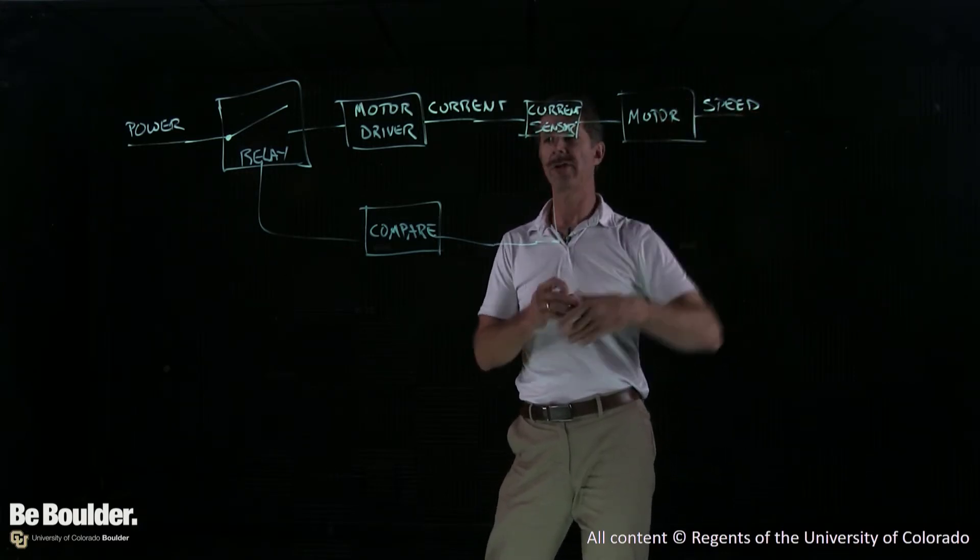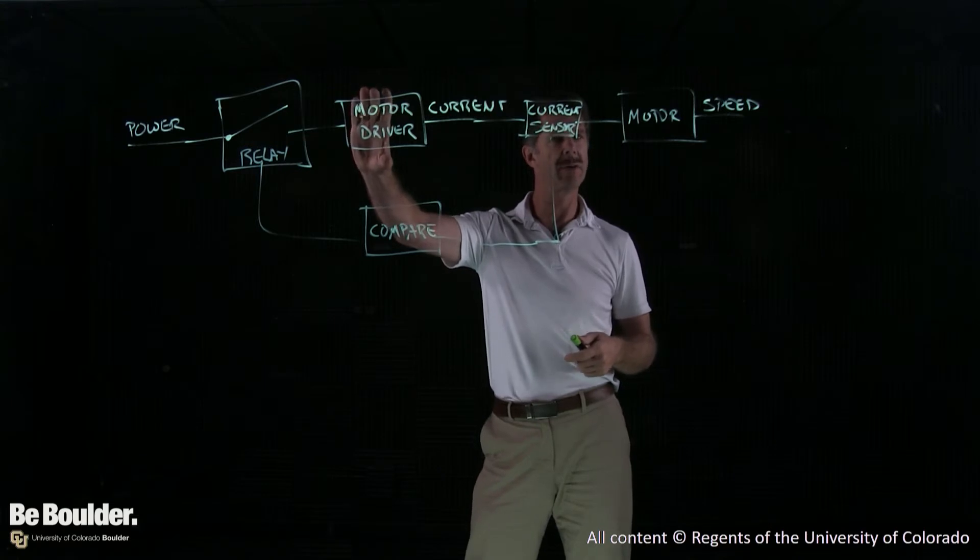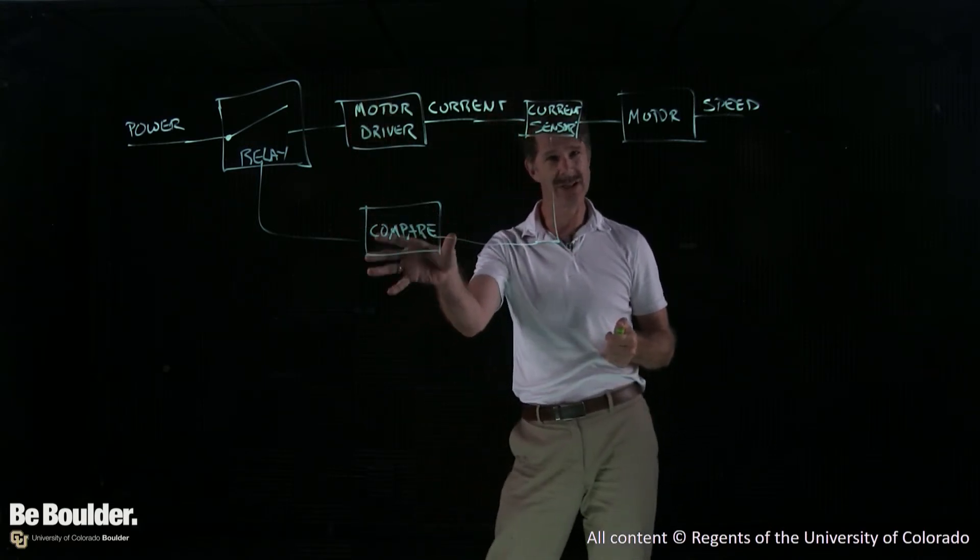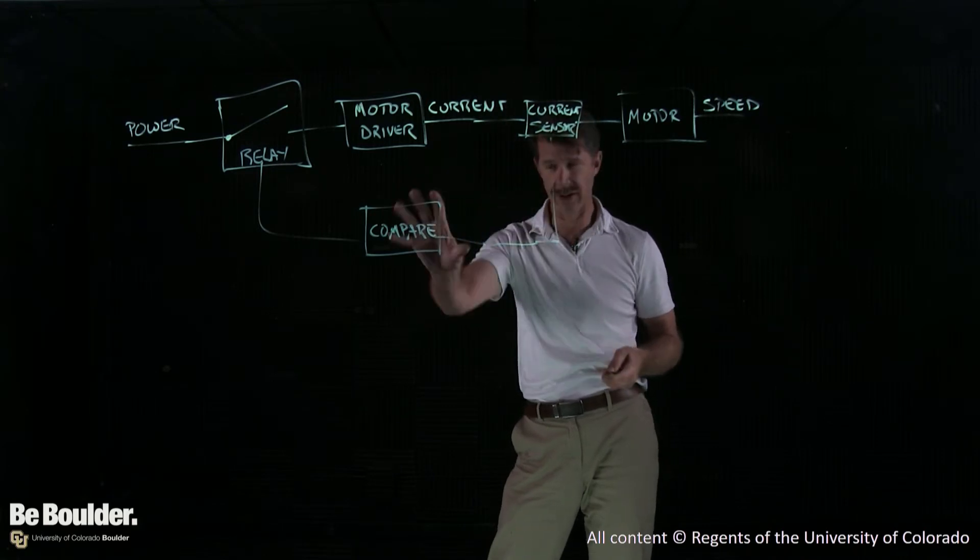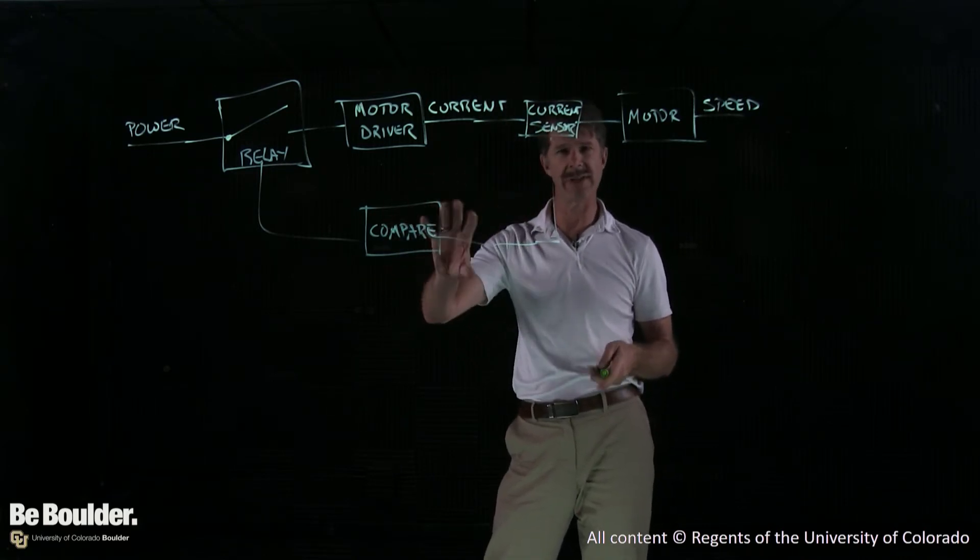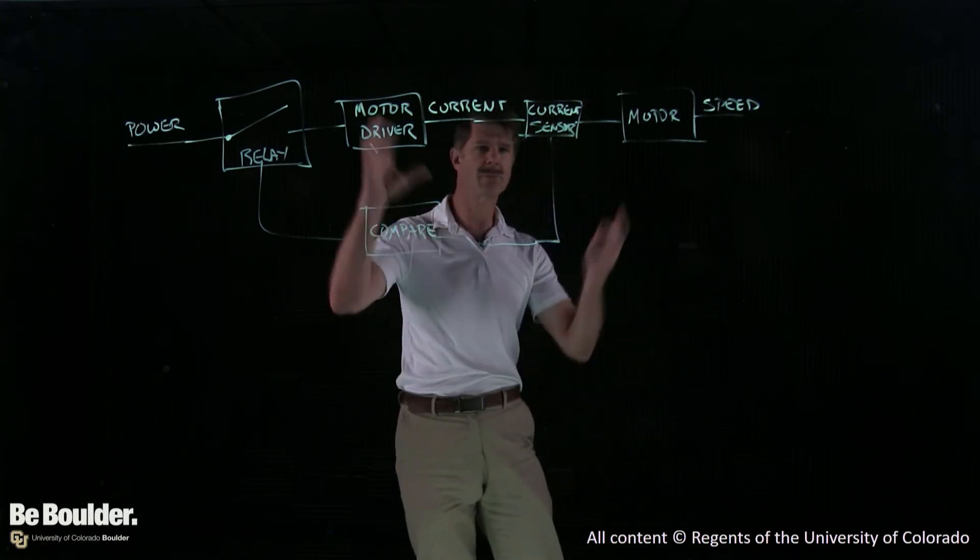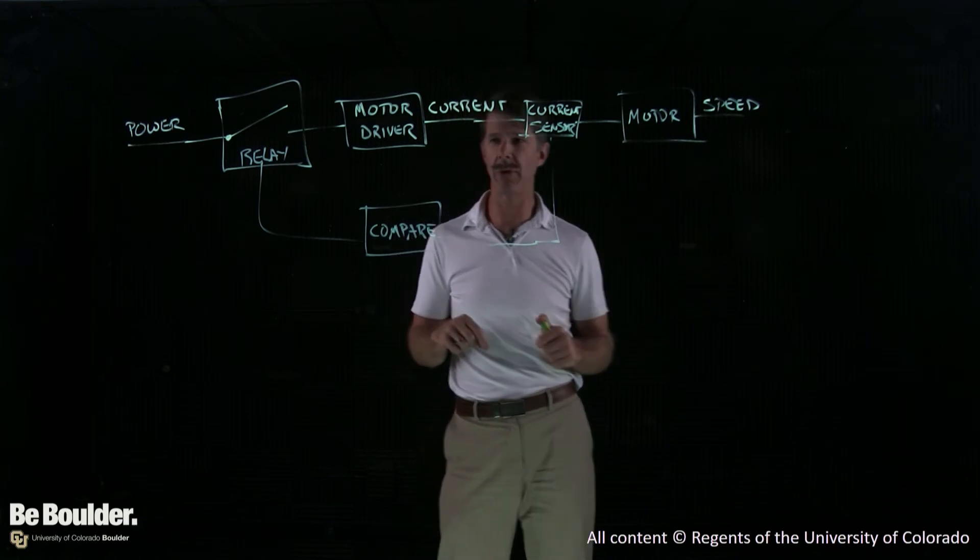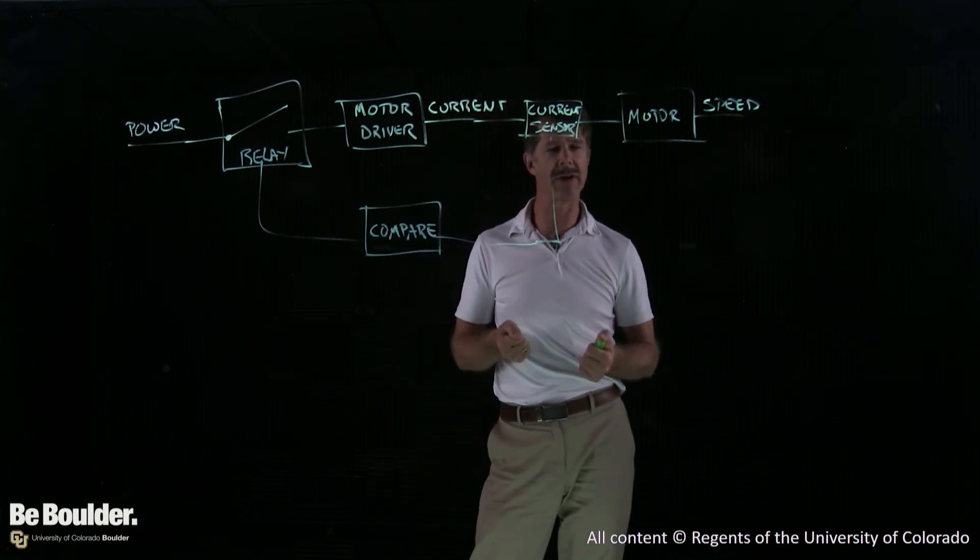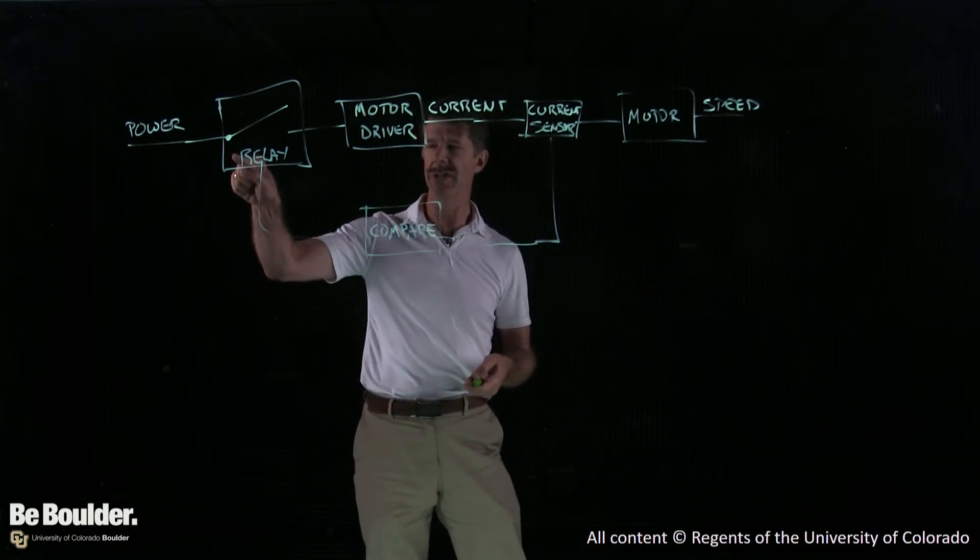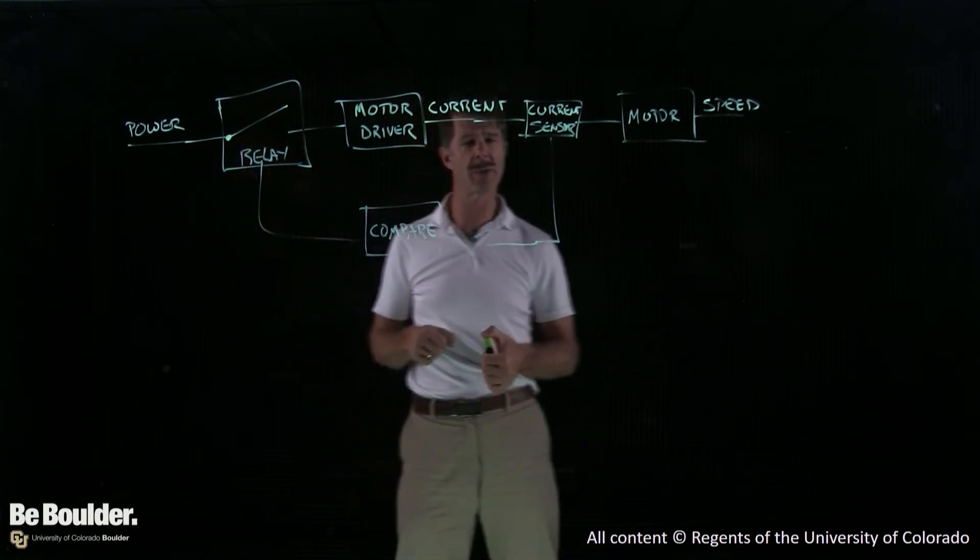Then maybe you reach over here and you grab that spindle, and you really make that motor start having to work hard. When you do that, it's going to draw more current from the motor driver. And you're going to detect that in your circuit as an increase in the current drawn. And your software is going to look at that value and at some point say, oh, that just passed one amp. And I think that's too much. I don't want to burn out my motor by letting the current go higher than that. And so when that signal passes one amp, you will send a signal to the relay and you'll open the switch.